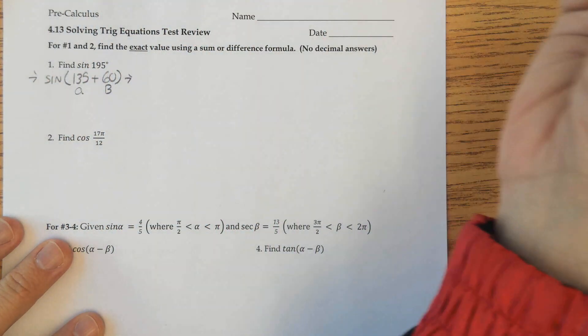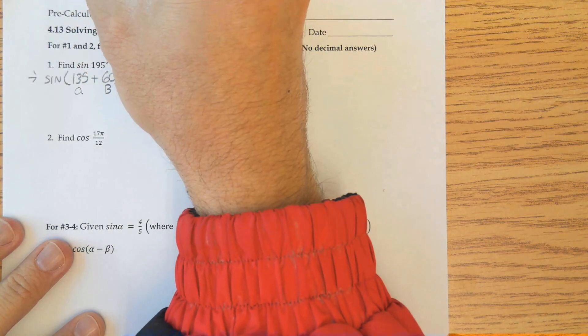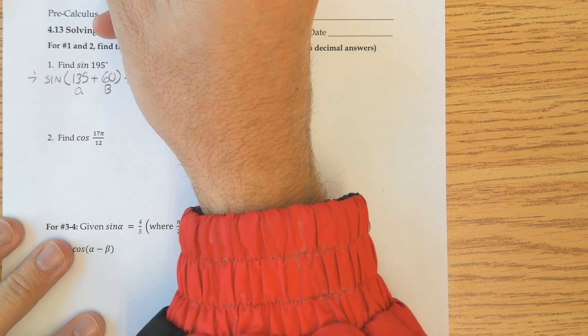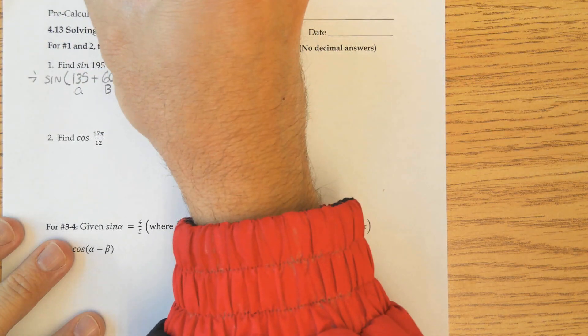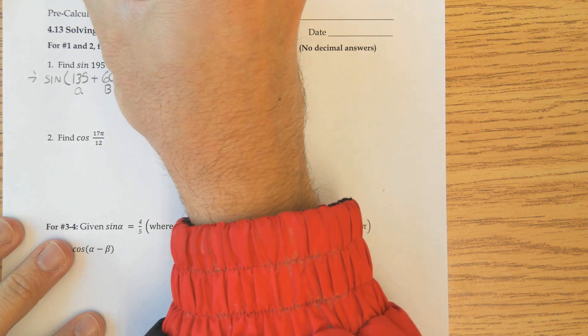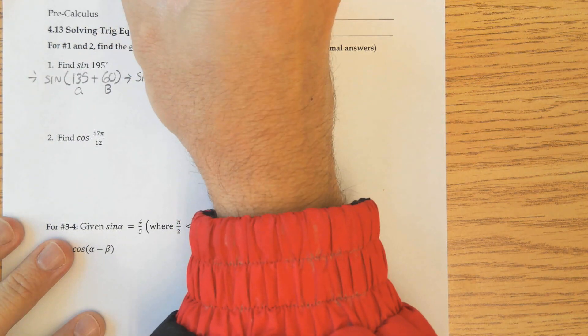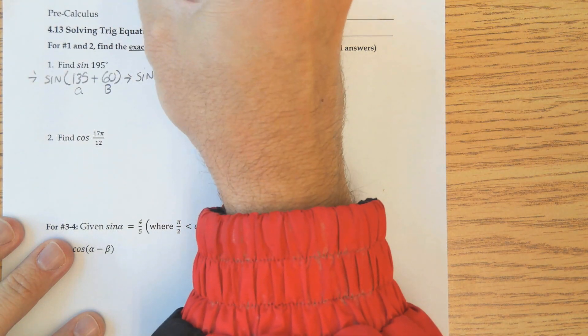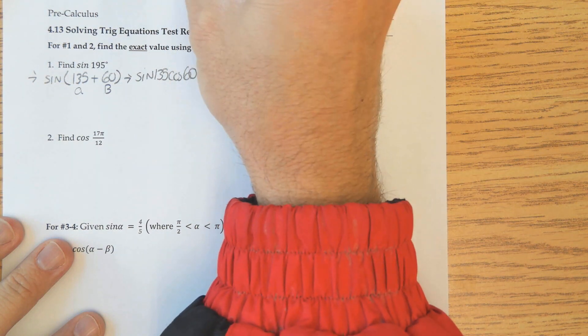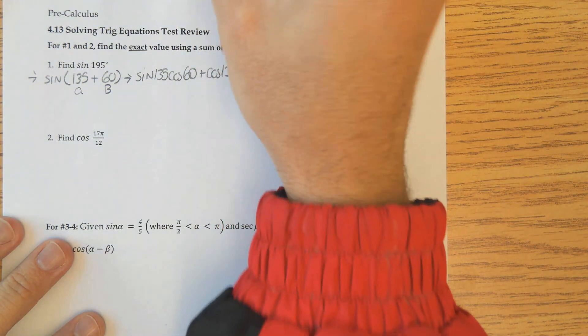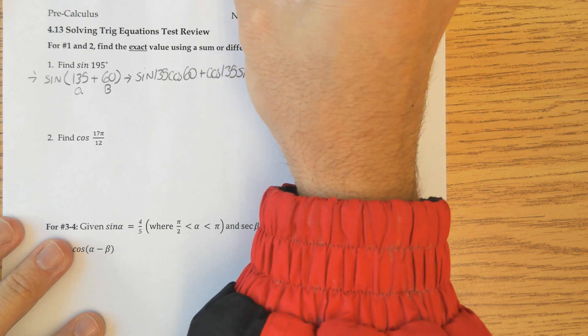I'm writing out my sum identity for sine. It's going to be sine of little a, which is 135, cosine of big B, which is 60, plus cosine of little a, which is 135, sine of big B, which is 60.